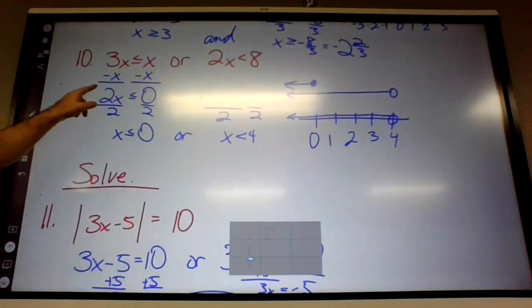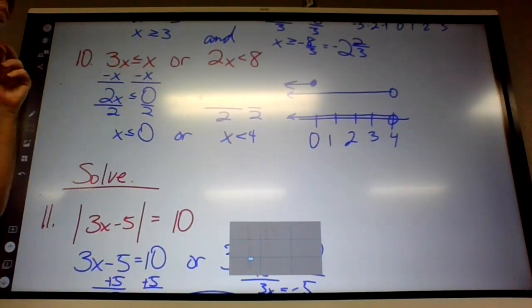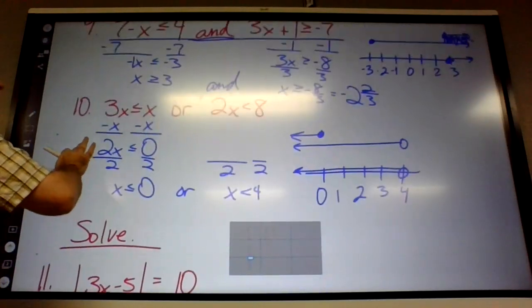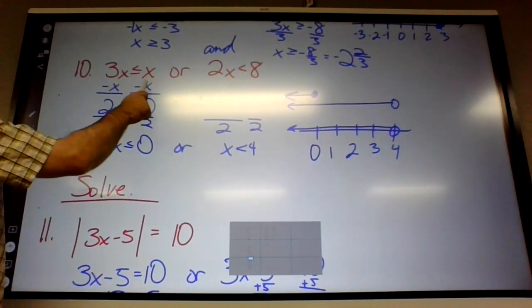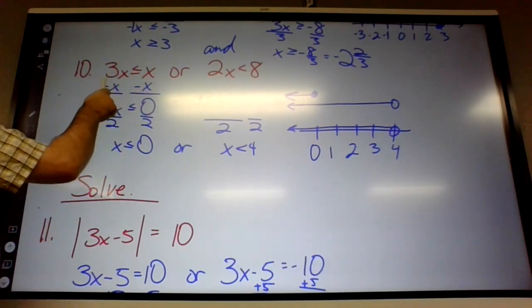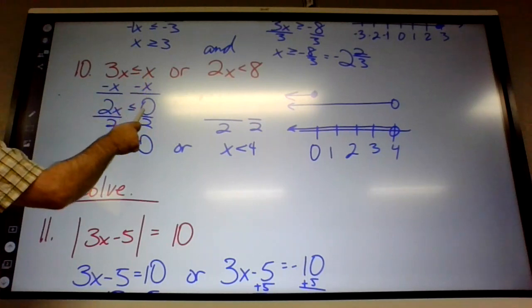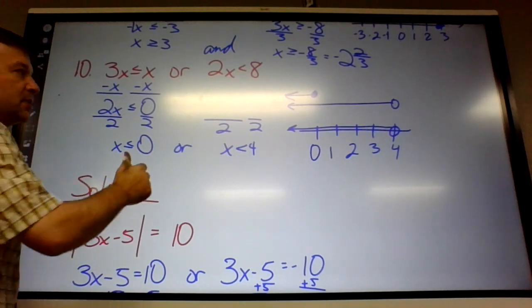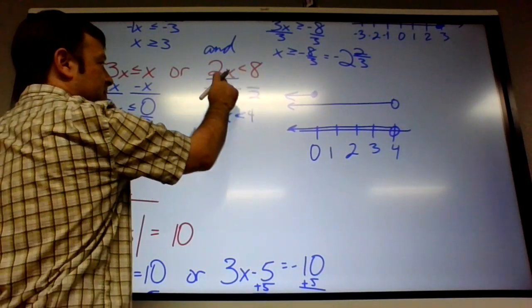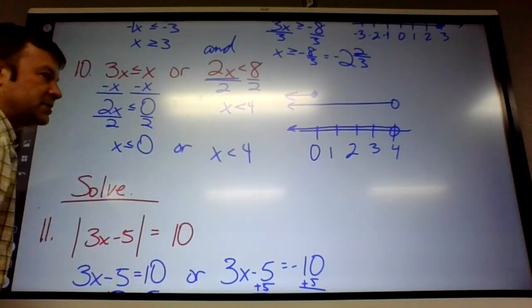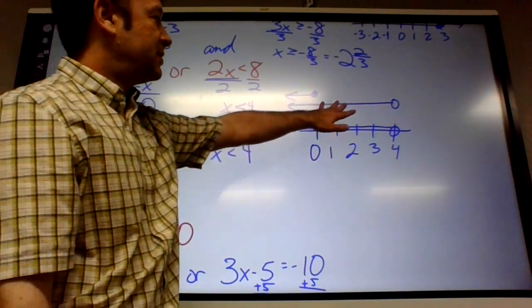10, this one freaked people out because there was just a 3X and an X. So just like back on 6 and 7, if you got X's on both sides, you need to subtract the X off one side. So we got 3X minus X, 2X less than or equal to 0. And divide by 2, you get X is less than or equal to 0. And then this one is 5 by 2. So X is less than 4.